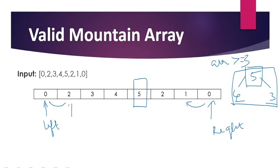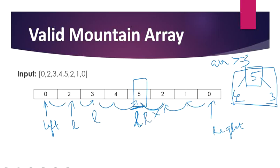We iterate our pointers toward the middle. If the value is increasing, left moves forward — left moves till 5, then checks whether 5 is less than 2, which is false, so the loop terminates. The left pointer is now at the middle, at our i. Similarly, iterating right while numbers are in increasing order from the right side, it reaches 5 and points there. Now both left and right pointers are at the same position — our i.